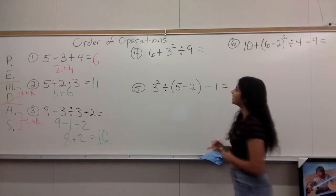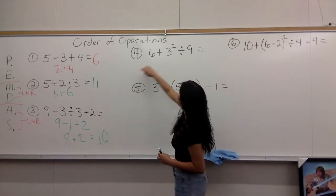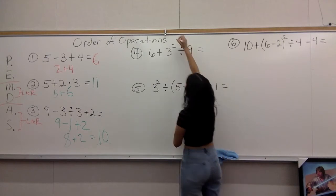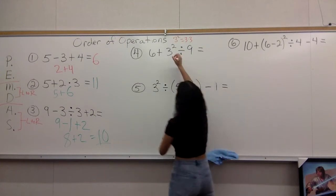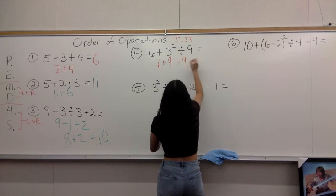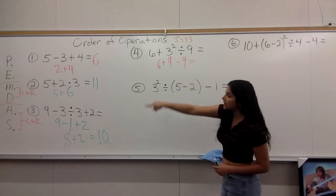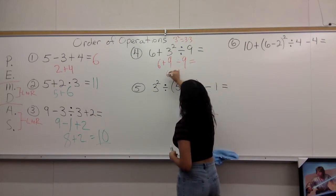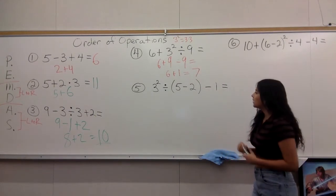When the problems get longer, remember the rules of order of operations. Going down the list for number four: parentheses — no. Exponents — yes, we have three squared right here. Remember, three squared just means three times three, so three squared is nine. Now we're left with addition and division. Division is always more important than addition, so we do that first: nine divided by nine is one. Then we get seven as our answer.